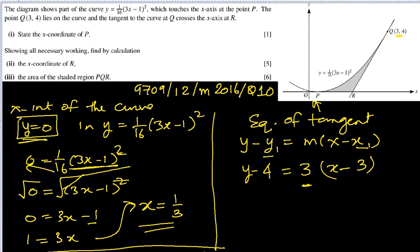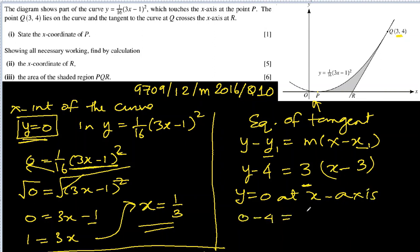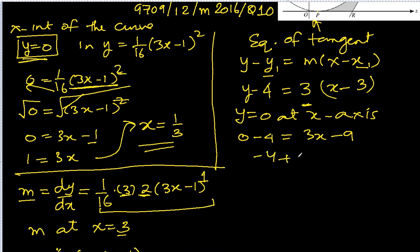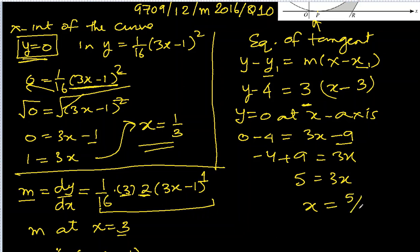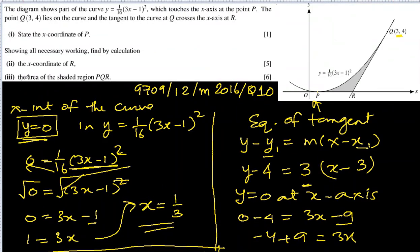To find the x-coordinate of R, we substitute y = 0 into the tangent equation, just as we did for the curve. So: 0 − 4 = 3(x − 3), giving −4 = 3x − 9, then −4 + 9 = 3x, so 5 = 3x, and the x-coordinate of R is 5/3.